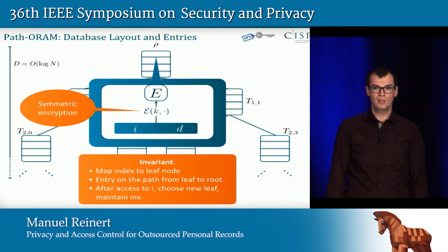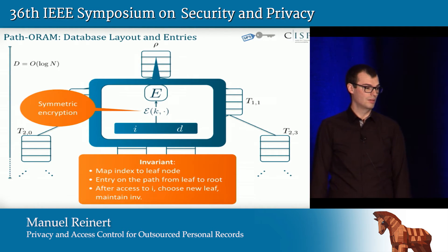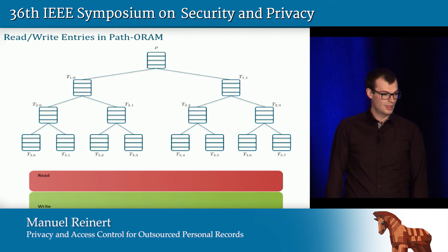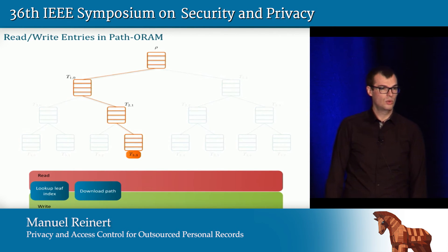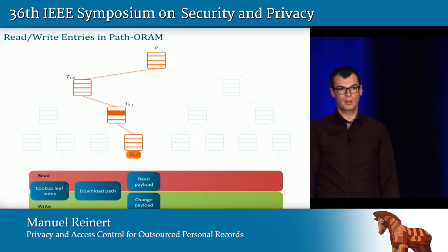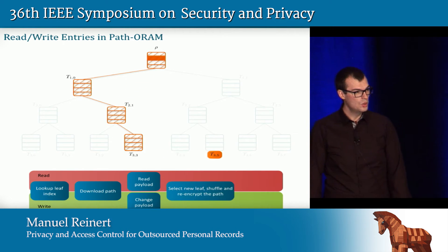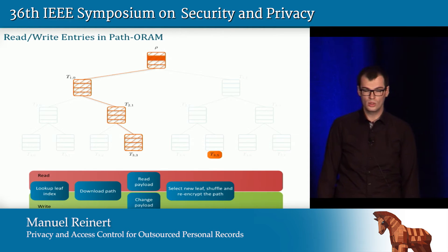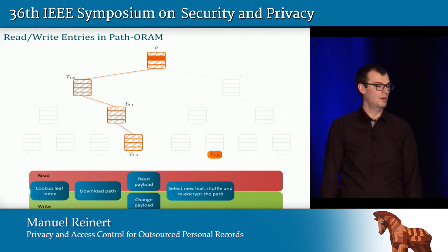Intuitively, to achieve obliviousness, whenever you access entry i you remap this index i to a new leaf and maintain the invariant — meaning the entry must lie on the new path from the leaf index to the root. In the read/write algorithms specifically: you first look up the leaf index, download the path locally, locate the entry, then read the payload for a read or change the payload for a write. Finally, you assign a new leaf index, ensuring the entry lies on the path from the new leaf to the root. To conceal from the server what was done, you re-encrypt the entire path and upload it back.